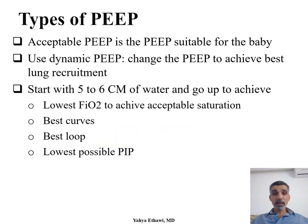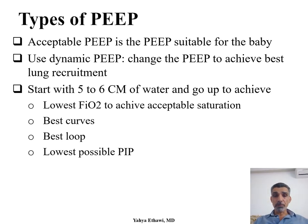The acceptable PEEP is the PEEP suitable for your baby. There is no fixed number — you have to use what I call a dynamic PEEP, or change the PEEP to achieve the best lung recruitment. I start between five and six, then use whatever number you're comfortable with to achieve the lowest possible FiO2 to achieve acceptable saturation.